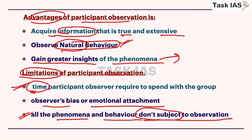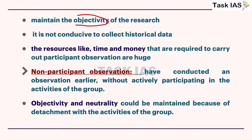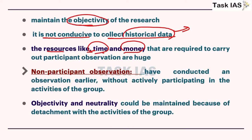Further limitations of participant observation: not all phenomena or behavior are subject to observation — for example, outside males are not allowed to observe pregnancy-related rituals. Maintaining objectivity is highly difficult, and it is not conducive to collecting historical data because you are observing the present society. Resources like time and money are very limiting, making this approach very costly.